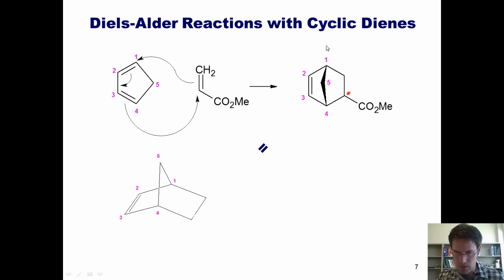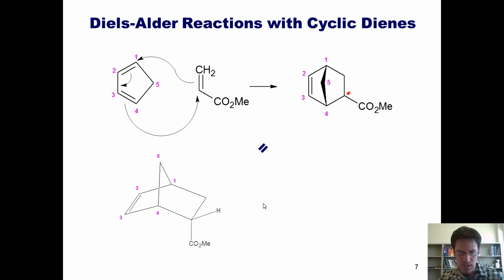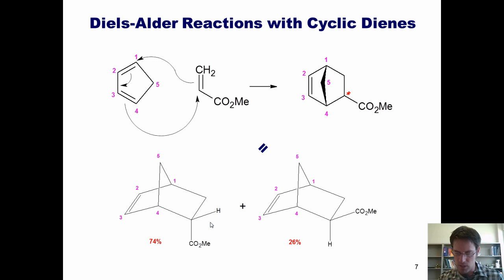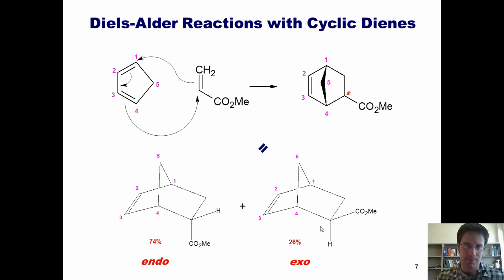One thing to notice is that I've neglected to show how the stereochemistry ends up at this position. Does the bond to our methyl ester end up going up or down — should I draw this bond as a wedge or a dash? The answer is both. We end up forming some product in which the ester is pointing down — the endo product, formed in 74% yield — and some in which it's pointing up — the exo product, formed in 26% yield.